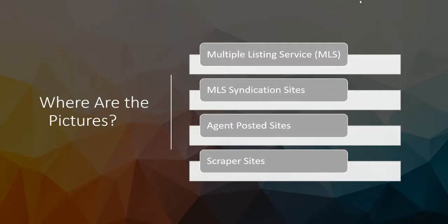So where are the pictures? First of all, they're in the multiple listing service. They're also on sites that syndicate the MLS — that would be Realtor.com, Zillow, Redfin, that sort of thing. They could also be on agent-posted sites, which becomes a little more difficult to remove, because maybe the listing agent posted the property on Craigslist, posted it on social media, or on their own website. That's going to be very difficult to remove.